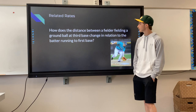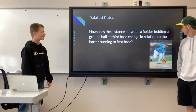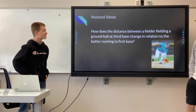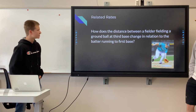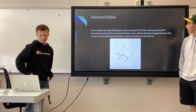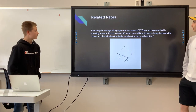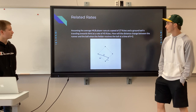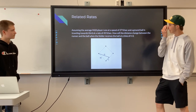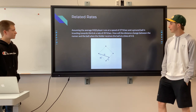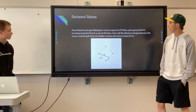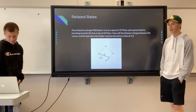For our first topic, we did related rates between the distance between a fielder fielding a ground ball hit at third base in relation to the batter running to first base. We assume the average MLB player runs at a speed of about 27 feet per second, and the ground ball is traveling toward third at a rate of 45 feet per second. We want to know how the distance changes when the fielder receives the ball at time t equals 2.